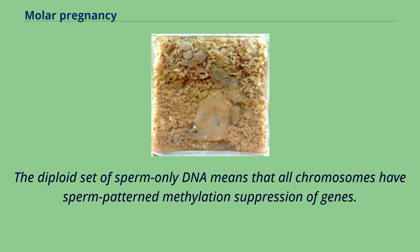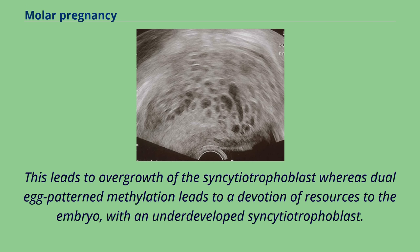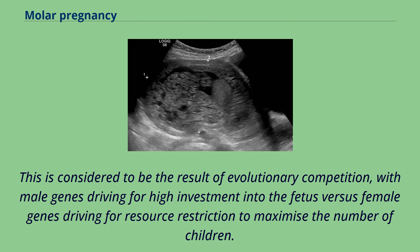The diploid set of sperm-only DNA means that all chromosomes have sperm-patterned methylation suppression of genes. This leads to overgrowth of the syncytiotrophoblast, whereas dual-egg pattern methylation leads to a devotion of resources to the embryo, with an underdeveloped syncytiotrophoblast. This is considered to be the result of evolutionary competition, with male genes driving for high investment into the fetus versus female genes driving for resource restriction to maximize the number of children.